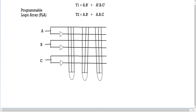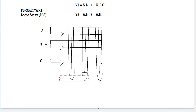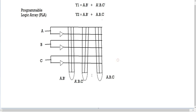Now I'm drawing the wires for each AND gate and removing any extra lines we don't need. Next, I'll label each AND gate with its combination: the first is A·B', the second is A'·B·C', and the third is A·B·C.